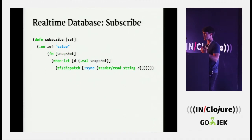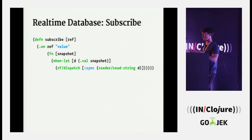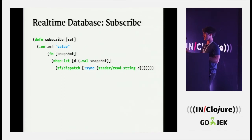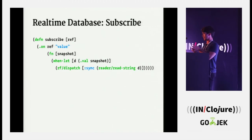You also need a way to get data out. For doing games and interesting stuff with more than one person doing something, you want to subscribe — similar to adding a watch to an atom in Clojure. Again it works on a reference: as the data changes at that path, you get a snapshot. If you get a snapshot, deserialize it and then dispatch a Re-frame event to get that data back in your system. This is an example of a non-user-triggered event in Re-frame.